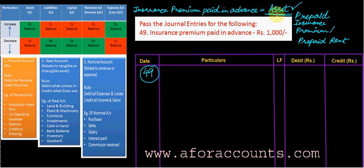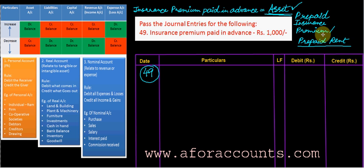Be it insurance premium paid, be it prepaid rent — anything which is paid in advance does not pertain to the current financial year. It pertains to the next coming financial year, but I am paying it right now, in advance. So instead of an expense, it becomes an asset.